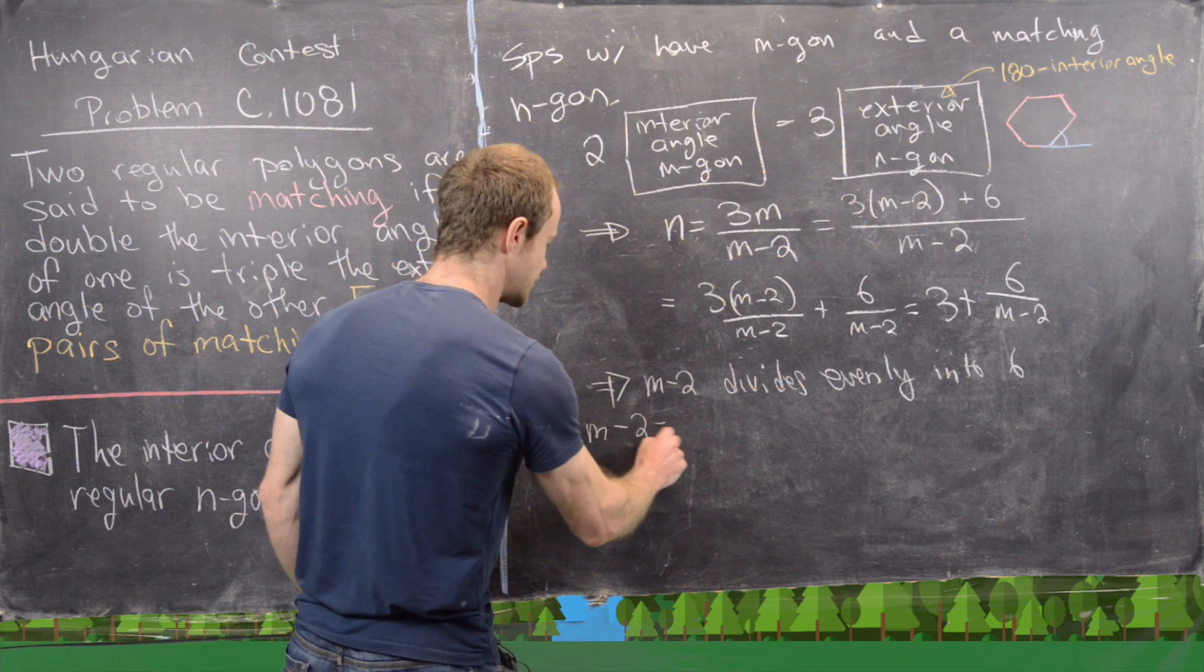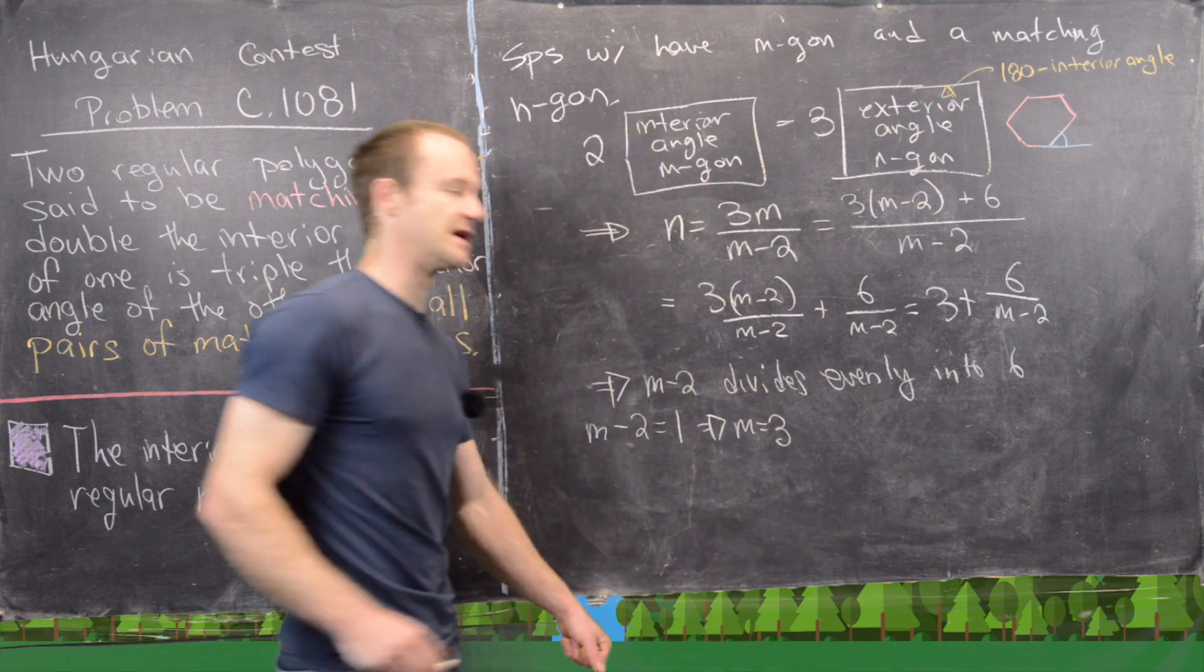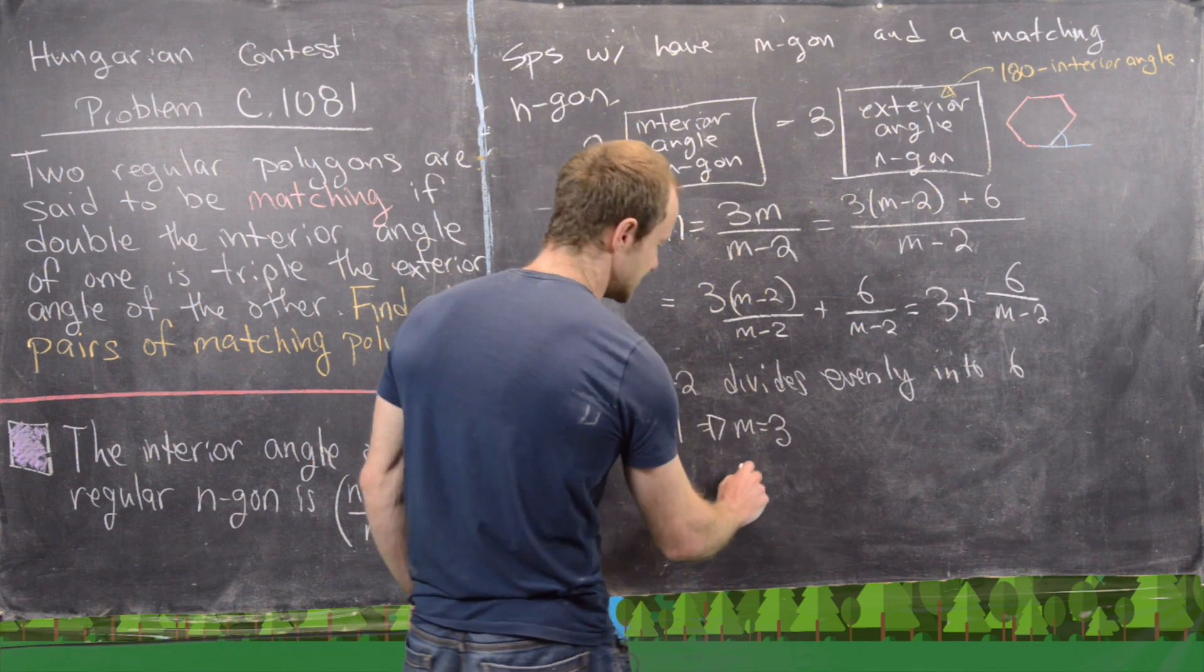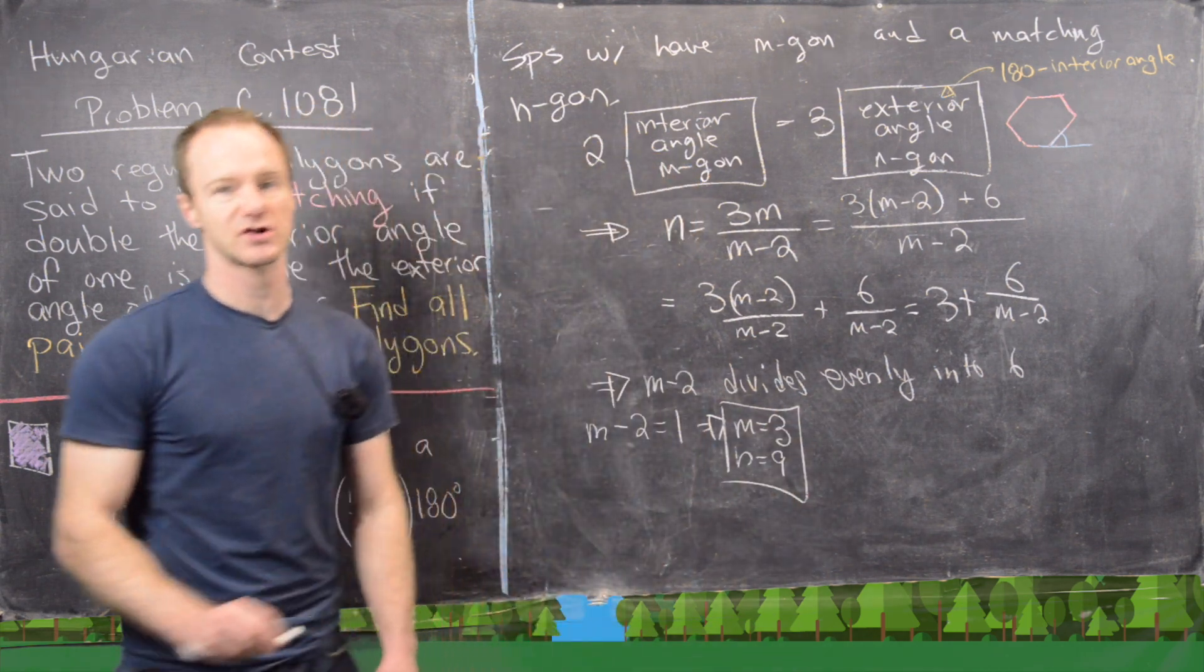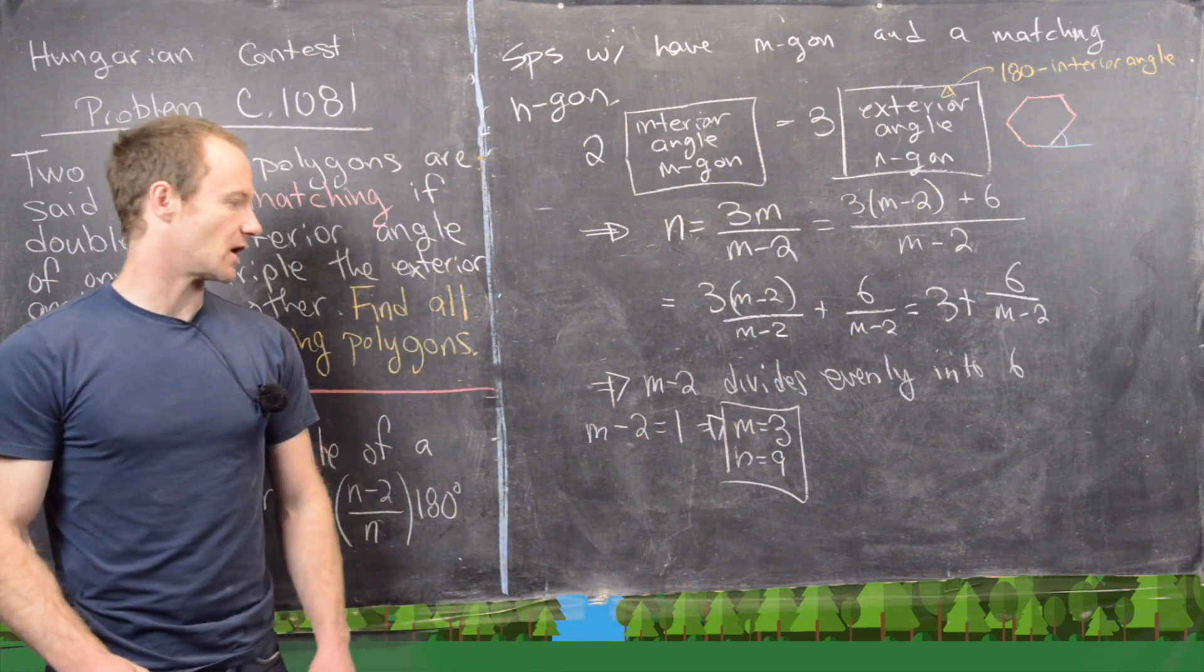But that gives us only a few possibilities. Case 1 is m-2 equals 1, so that tells us m equals 3. But then if m equals 3, you can plug that into this equation and we'll say that n equals 9, which gives us our first pair. So our first pair is a triangle and a 9-gon.